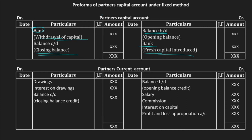So in the partners capital account, worry about only three things: the balance brought forward from last year, if fresh or additional capital is introduced write 'bank' on the credit side, and if a partner is withdrawing capital record it on the debit side. Now moving to the partners current account — in the credit side the first entry is balance brought down, the opening balance carried forward from the last year. Next, if a partner is paid salary it is recorded here, then commission if commission is paid to the partner.